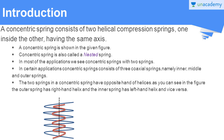A concentric spring consists of two helical compression springs, one inside the other, having the same axis. In the given figure, you can find a concentric spring where the red colored spring is inside the blue colored spring, and they have the same axis given by the dotted line. In most applications, we see concentric springs with two springs. The concentric spring is also called a nested spring.